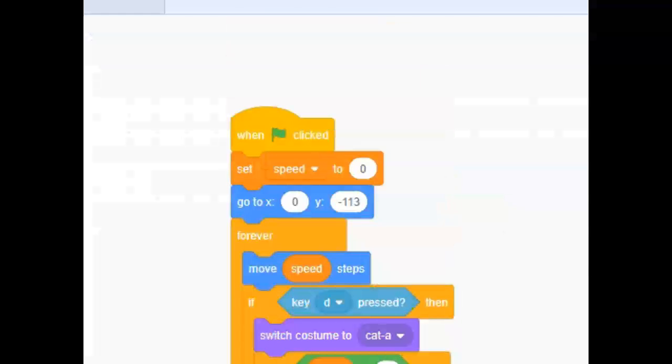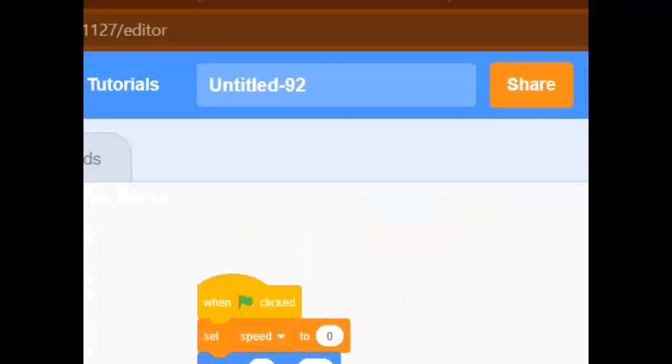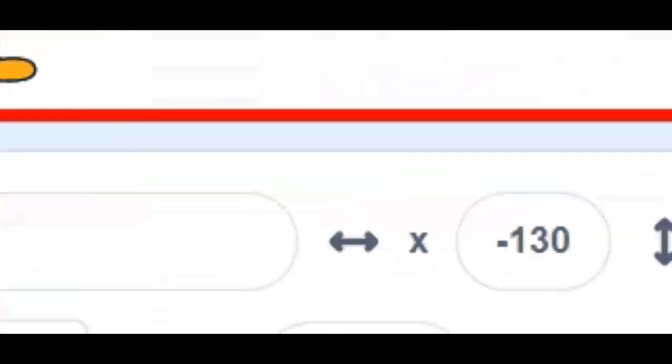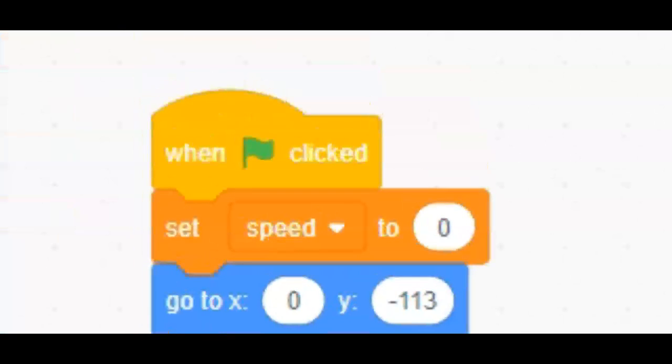Now this uses just one script. When clicked, set speed to zero. Speed is a variable I made. And then there's going to a certain position. I made it center. This is not required.